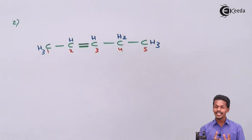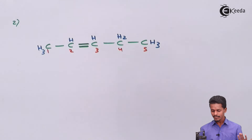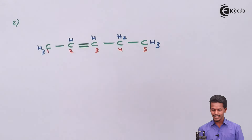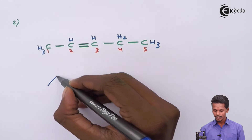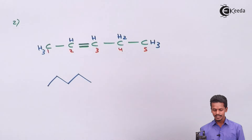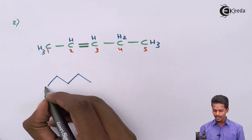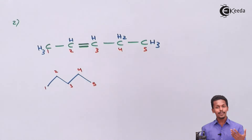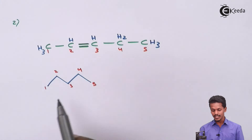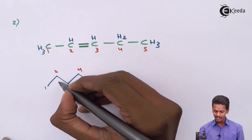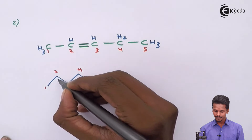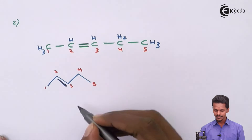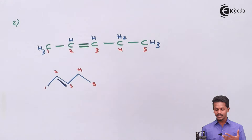Now we draw the bond line formula. Since the five carbon atoms are in a straight chain, we draw a zigzag line numbered one through five. The carbon-carbon double bond is between carbon number two and carbon number three, which is indicated in the bond line formula with a double bond between those two positions.